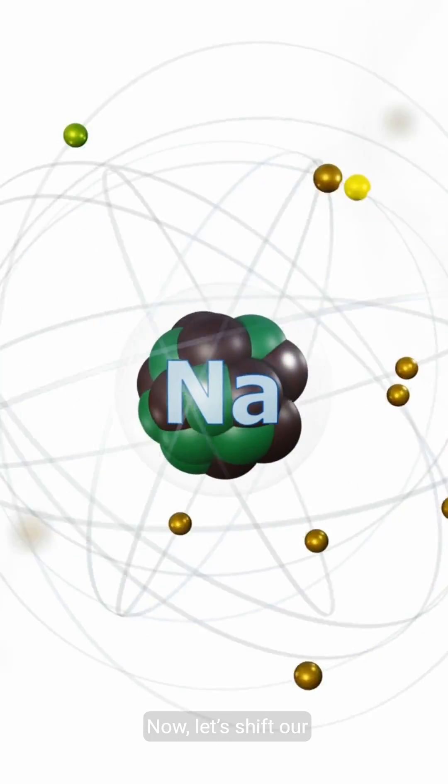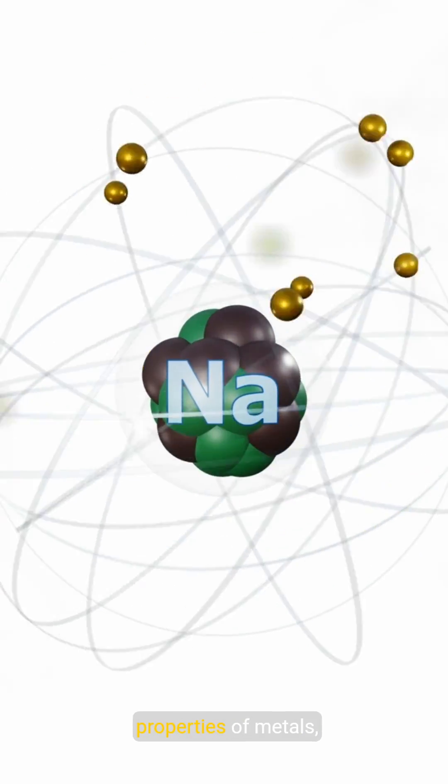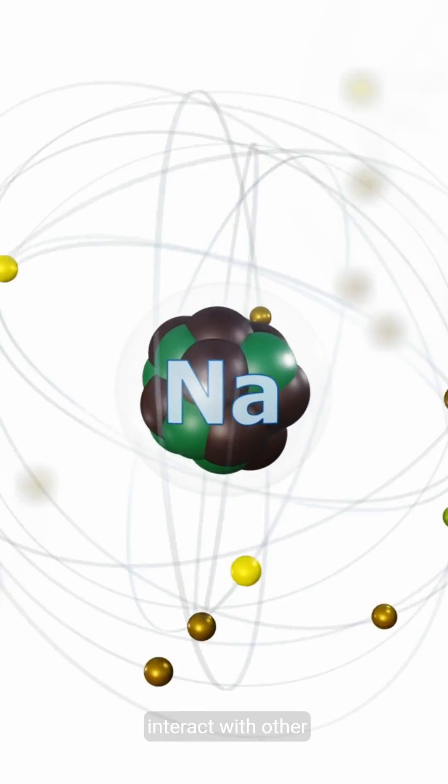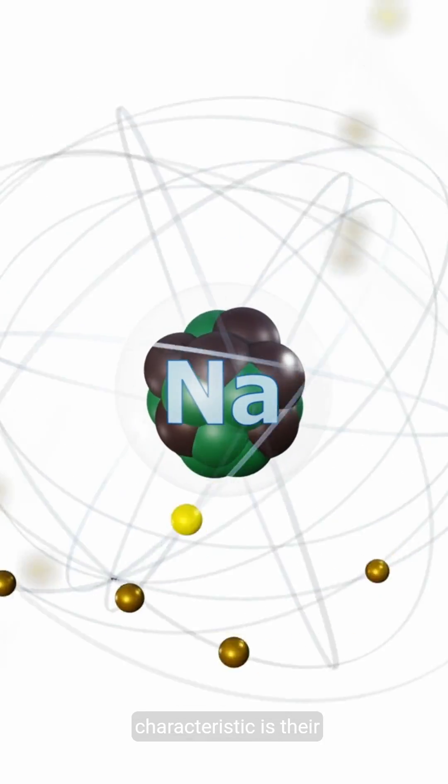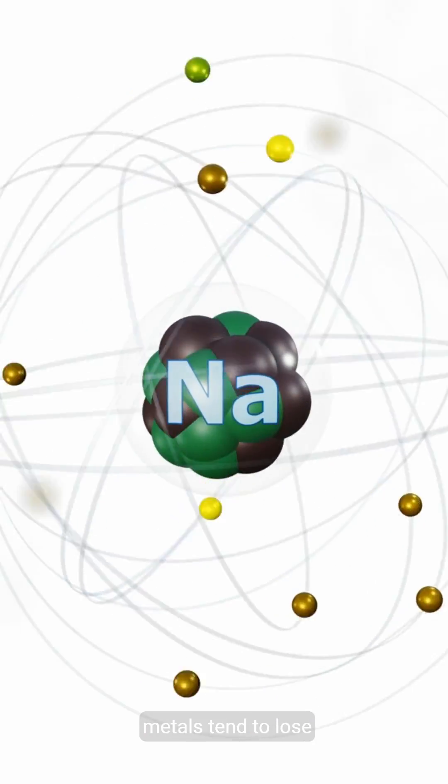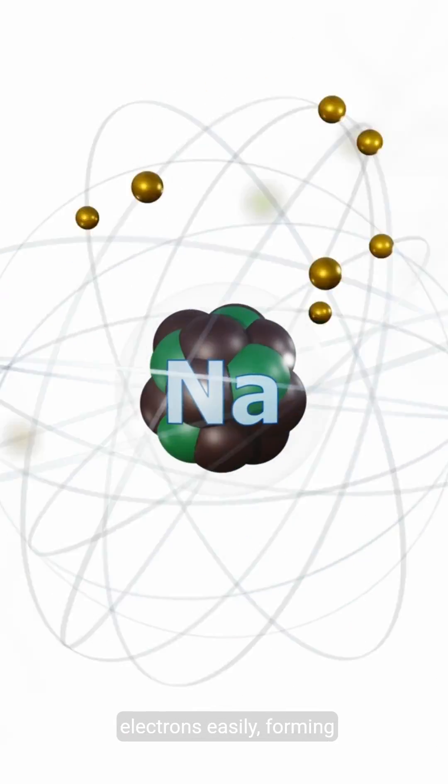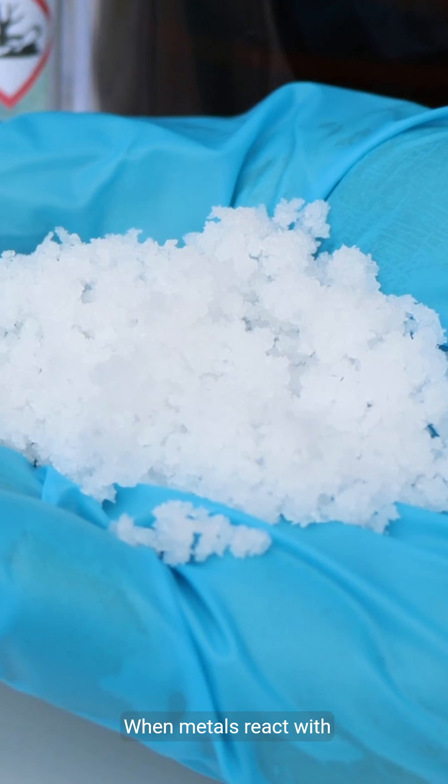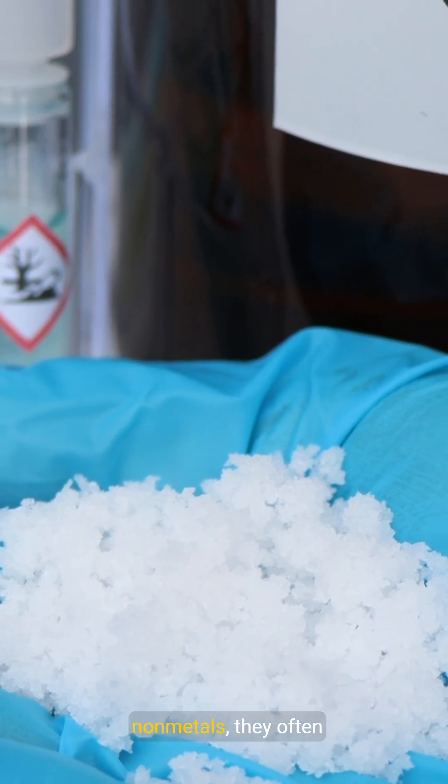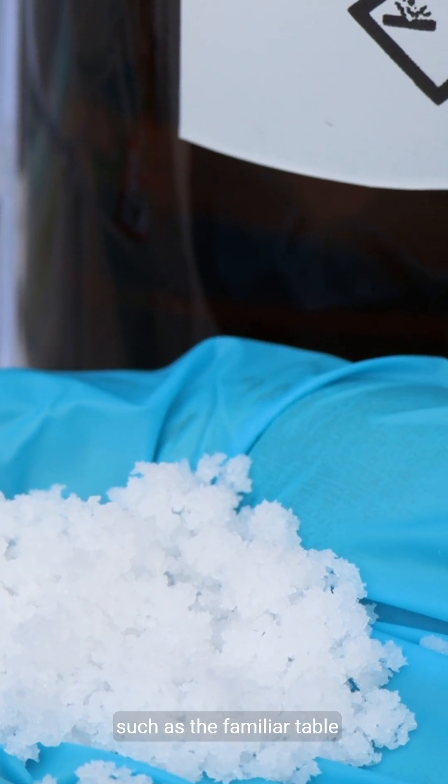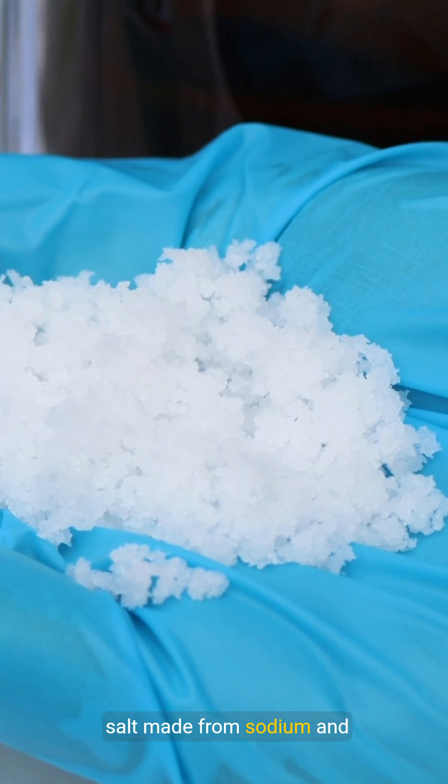Now, let's shift our focus to the chemical properties of metals, which reveal how they interact with other substances. One key characteristic is their electropositivity. Metals tend to lose electrons easily, forming positive ions. When metals react with non-metals, they often create ionic compounds, such as the familiar table salt made from sodium and chlorine.